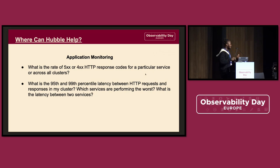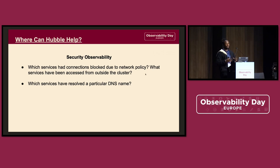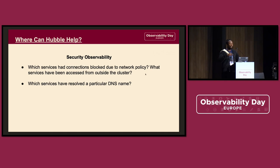For application monitoring, Hubble can show you the HTTP status codes for whatever request you make and latency between HTTP requests. So Hubble gives you a full-blown observability layer for your cloud-native applications. For security, it answers which services had connections blocked due to network policy. I've had people ask how you know your network policy is working — Hubble can help answer that. For example, if you create a network policy with a default deny for ingress and egress, Hubble can show you the flow of all that traffic being dropped.